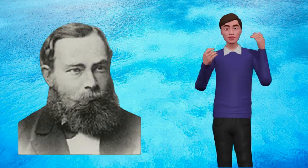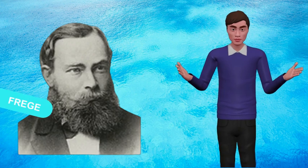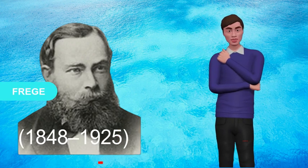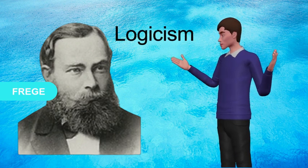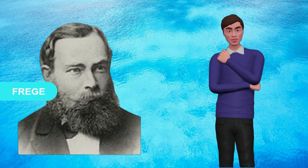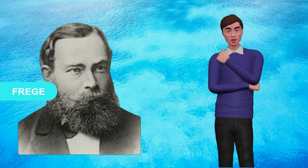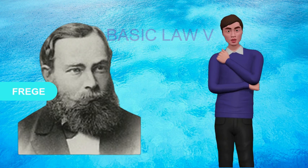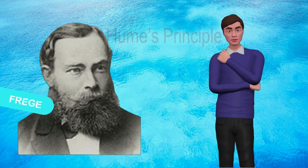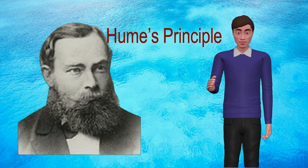5. Frege. Friedrich Ludwig Gottlob Frege, 1848-1925, was a German mathematician, logician, and philosopher who founded logicism. He used the general principle of comprehension by building arithmetic from logic which he called Basic Law 5 but was later proved by Russell that it is really inconsistent. Basic Law 5 was later replaced by Hume's principle.